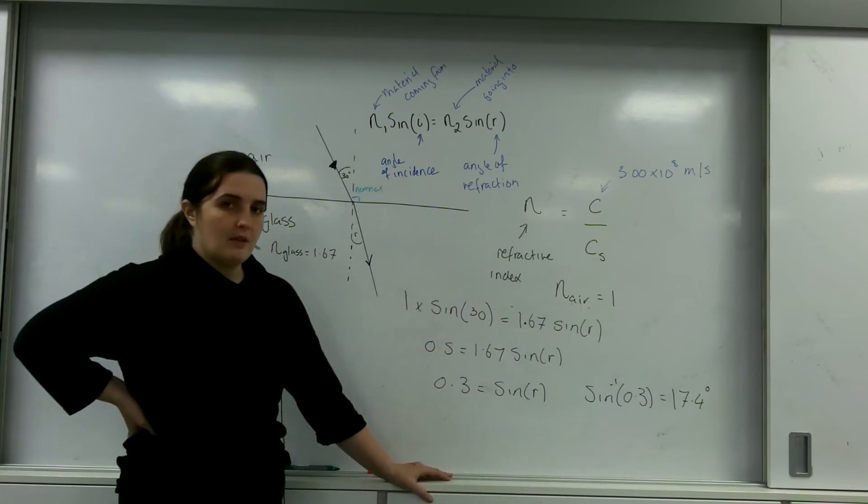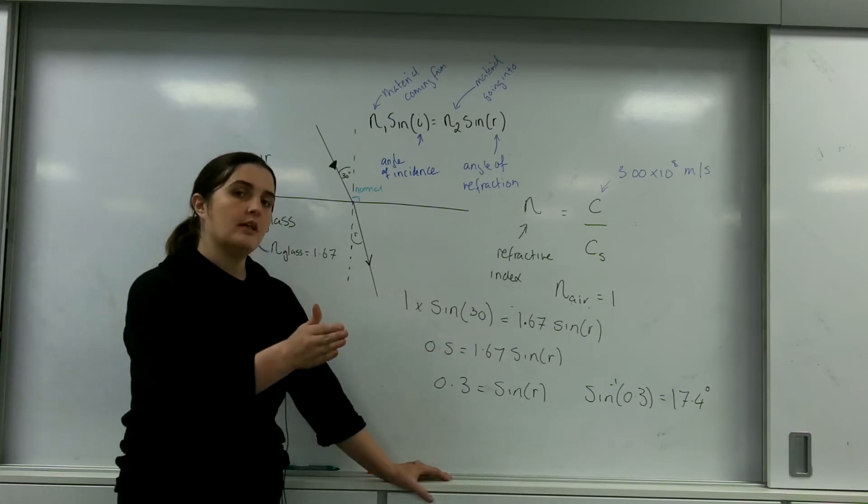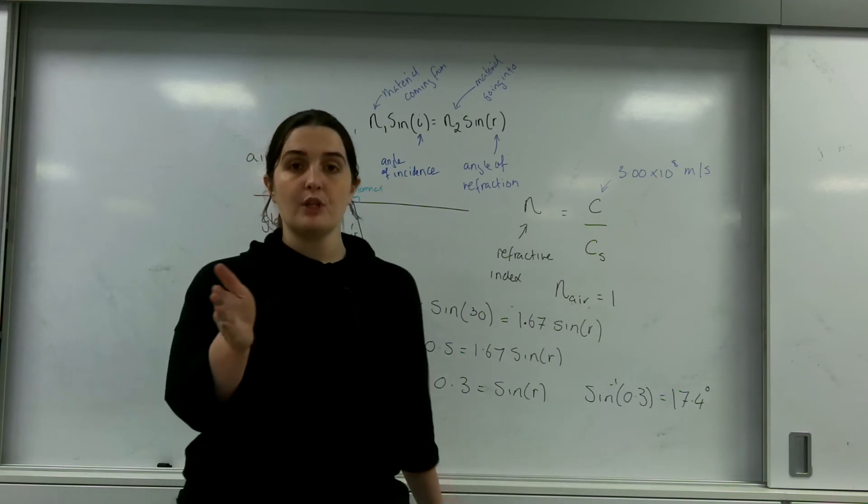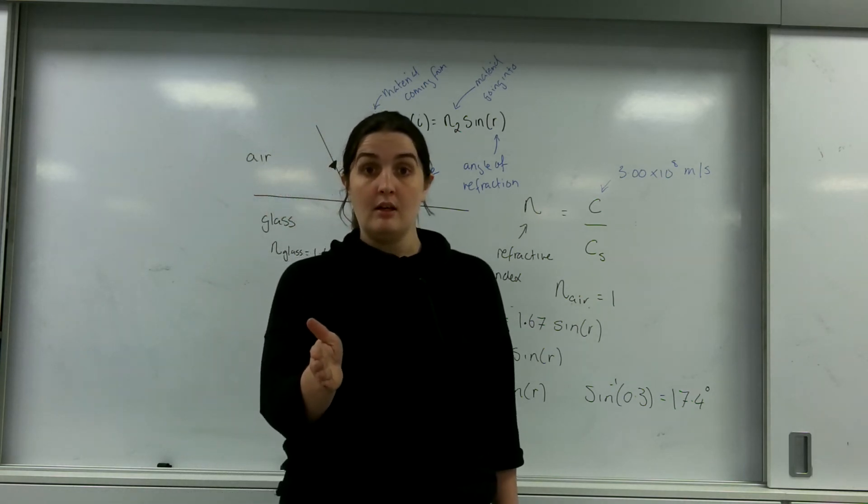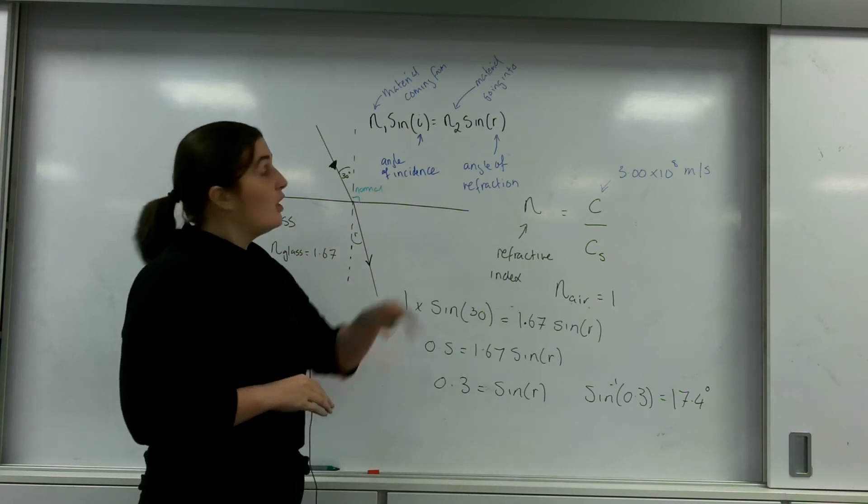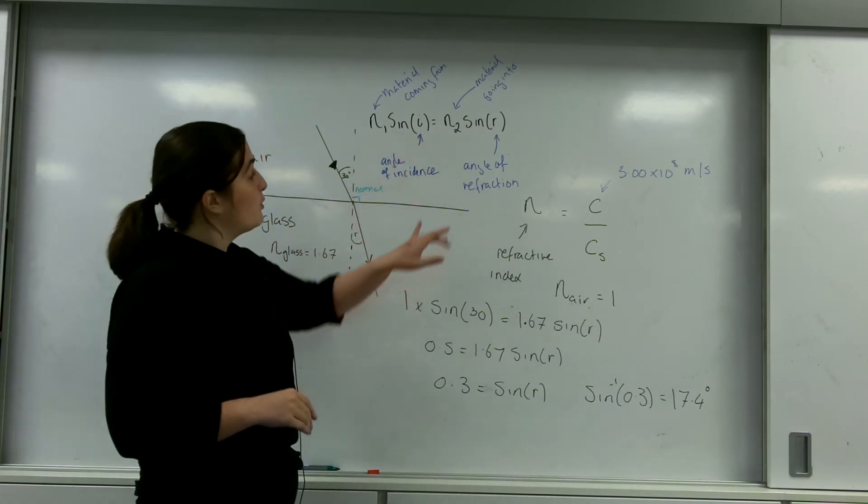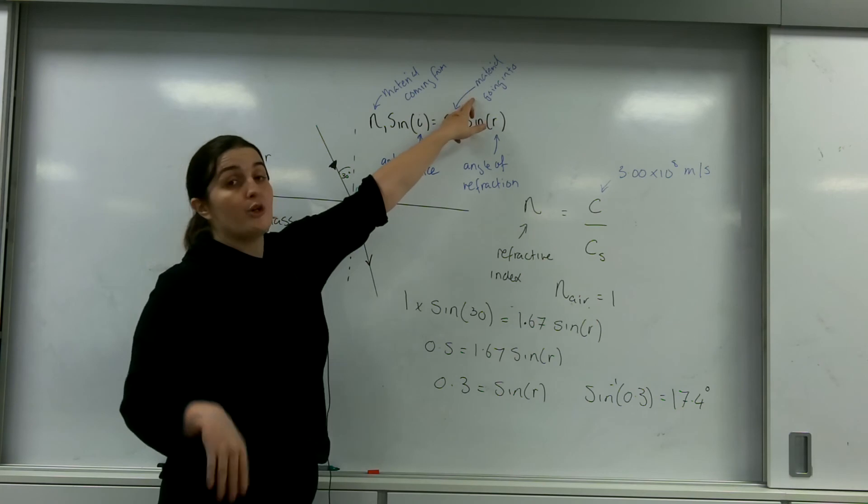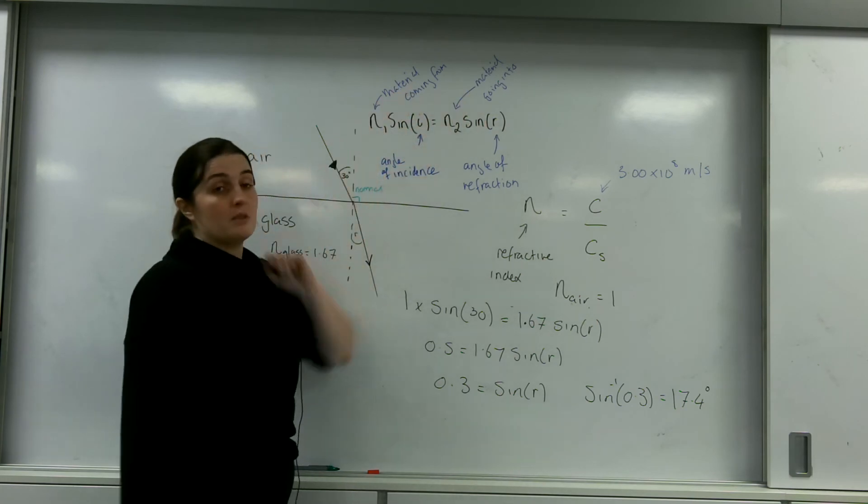So this is the idea of a refractive index. That an object when light goes into it starts to slow down and will start to turn. The amount it will turn is based on Snell's law's formula, which is on here. And it's important to remember N2 is what you're going into and N1 is the material you're coming from.